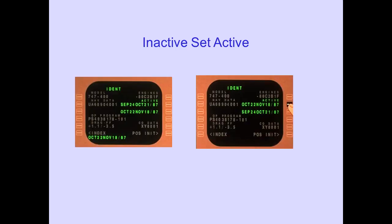To make the inactive set active, enter the inactive dates into the scratchpad, then line select the scratchpad information into the active line. Notice that the October 22nd to November 18th data is now active.